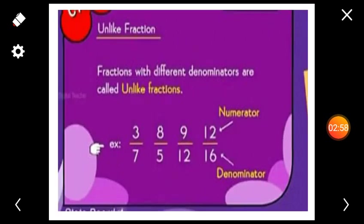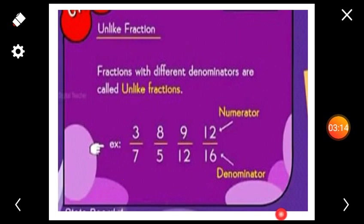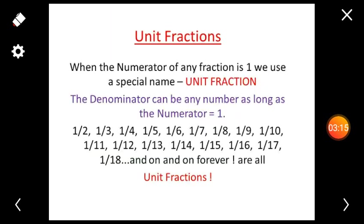Unlike fractions. Fractions with different denominators are called unlike fractions. For example: 3 by 7, 8 by 5, 9 by 12, and 12 by 16. Here, the denominators are different. Such type of fractions are called unlike fractions.